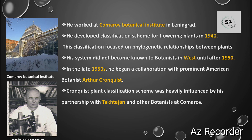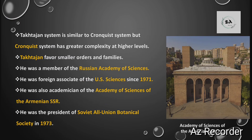In the late 1950s, Armen Takhtajan began a collaboration with prominent American botanist Arthur Cronquist, and after working together, western botanists came to know Takhtajan. Cronquist developed his own plant classification system, and in that system the work of Takhtajan and other botanists who collaborated with Cronquist was reflected. Takhtajan's system of classification is similar to Cronquist's system, but the Cronquist system has much greater complexity at higher levels. Takhtajan favors smaller orders and families.